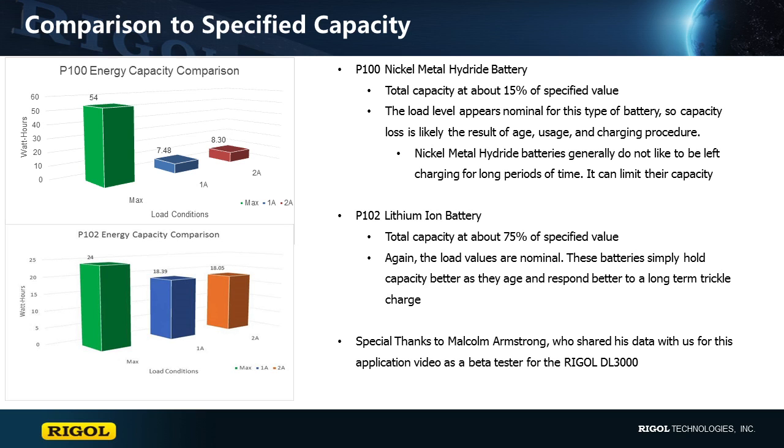On the other hand, the lithium ion batteries are still operating at about 75% of their listed capacity. These batteries simply hold capacity better and respond better to being charged consistently. These are just some of the battery characteristics you can test with a DL3000 series electronic load from Rigol.